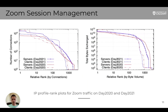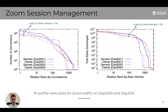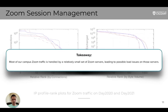To better understand Zoom sessions on our campus network, we analyzed Zoom server usage. The left graph is a profile rank plot showing how connections are distributed across clients and Zoom servers on two representative days — September 2020 and a year later in 2021. The right graph illustrates the corresponding IP volume rank profile. In 2020, four NAT IPs dominated the Zoom connections and traffic, while in 2021 things are more widely distributed among a larger set of IPs, showing more people on campus with their own devices. The load increase on Zoom servers is evident, and out of about 2,000 server IPs seen every day, only a couple of hundred handle most of the traffic, leading to possible load issues on those servers.